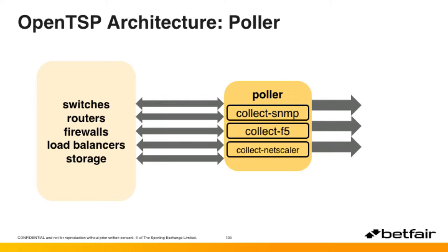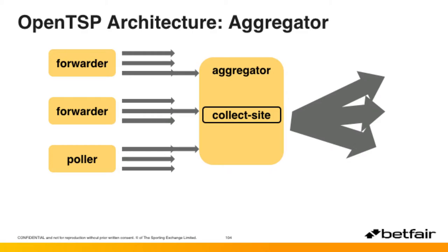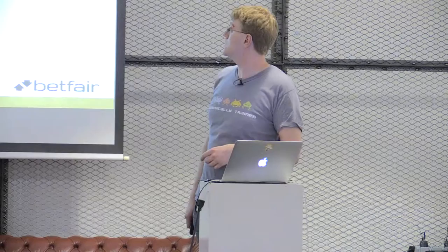The next piece is what we call the aggregator. We take one stream from each of the forwarders and polars — it literally just listens on TCP port 4242 and writes all metrics into what we call the site feed. This is the big gray arrows where we're currently seeing about 100,000 different metrics a second, and we're shipping them to six different endpoints for analysis.